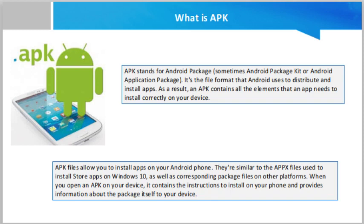APK files can also be distributed directly to other Android users for installation on their devices. Android users can grant permissions to install unknown apps if they wish to access APK files from another source. Users may wish to install an APK directly if they are beta testing an unreleased version of an application, or if a device restriction prevents them from downloading an app from Google Play.